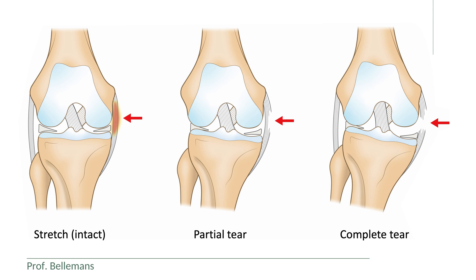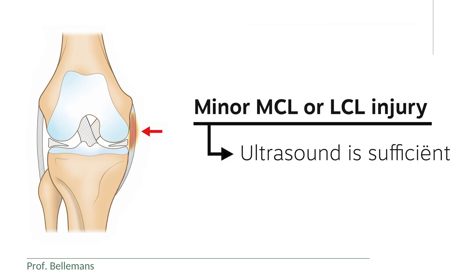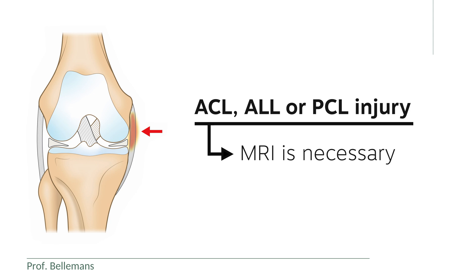Most often, an ultrasound or an MRI is required to determine the severity. In case of a minor MCL or LCL injury, an ultrasound may provide already sufficient information. However, if an ACL, ALL, or PCL injury is suspected, an MRI is always necessary.